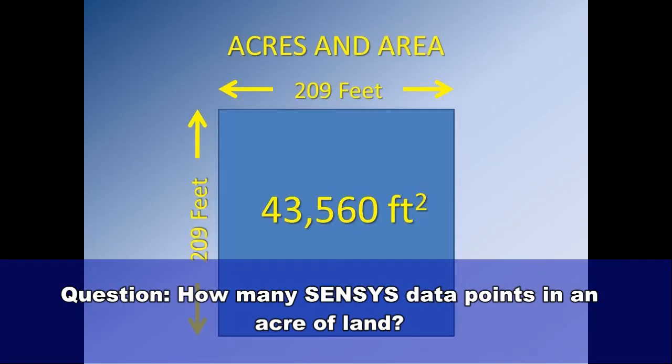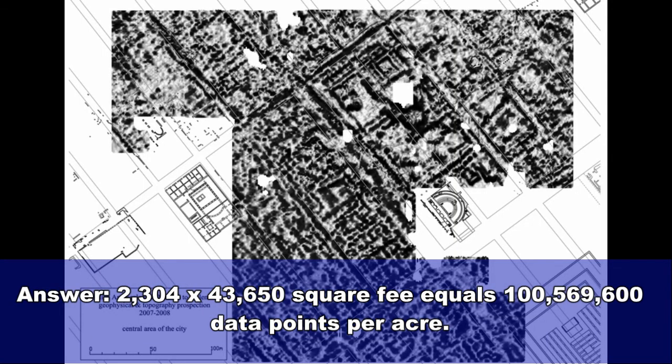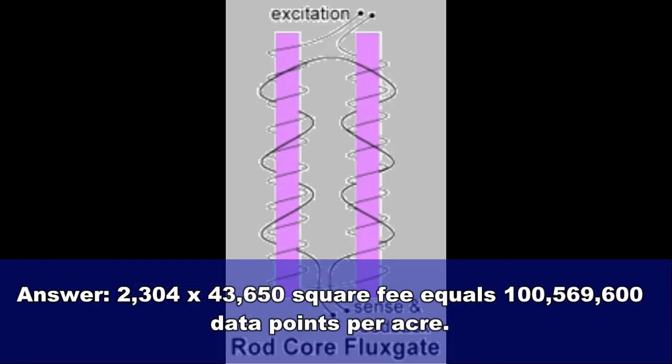Question, how many SENSI data points in an acre of land? Answer, 2304 times 43,650 square feet equals 100,569,600 data points per acre.